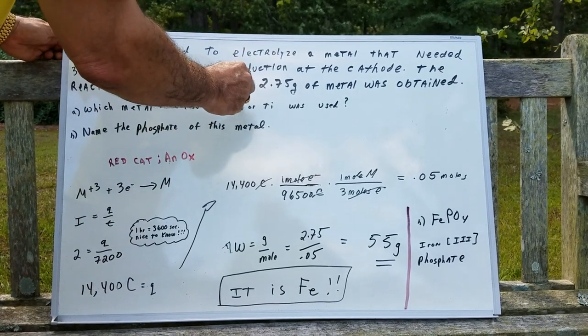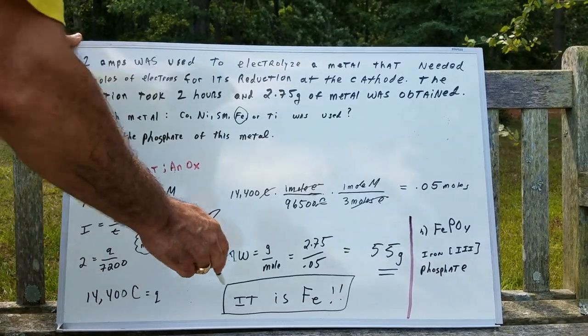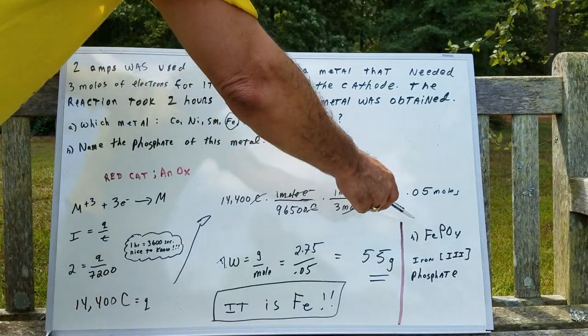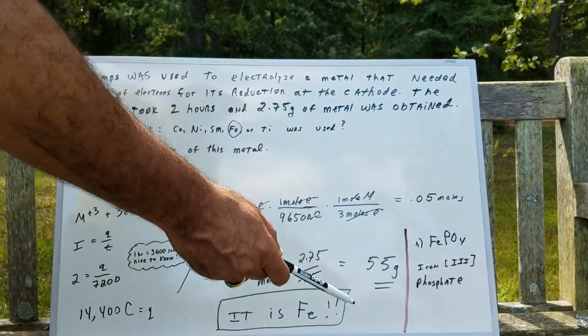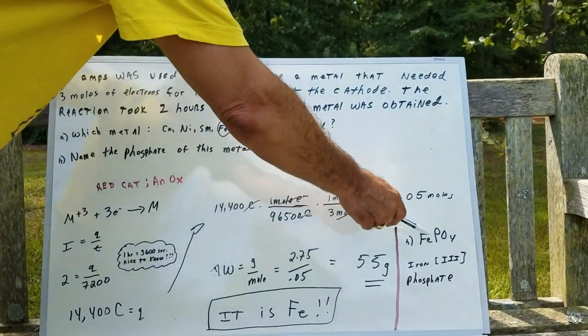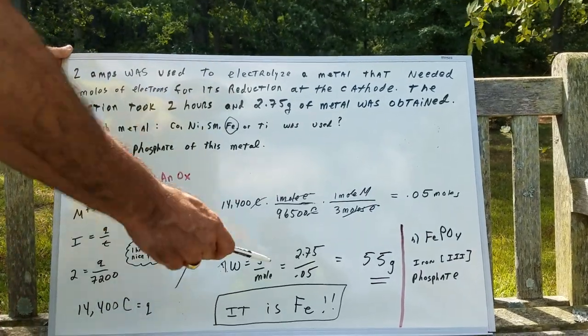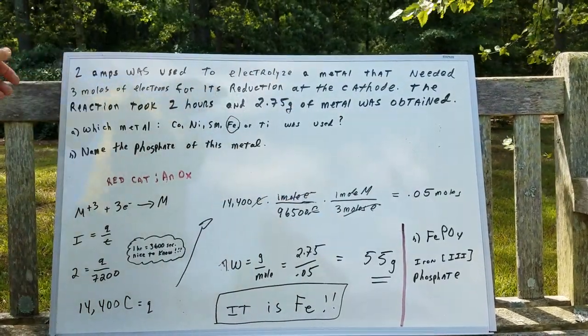Gives me 55 grams. You look it up on the periodic table, you would see iron is 55 grams. Because iron is plus 3, phosphate's minus 3, the formula would be FePO4, and that would be iron(III) phosphate.